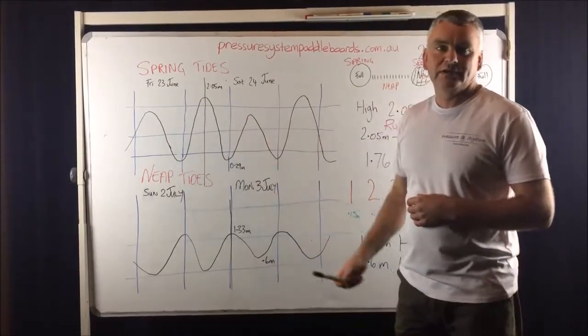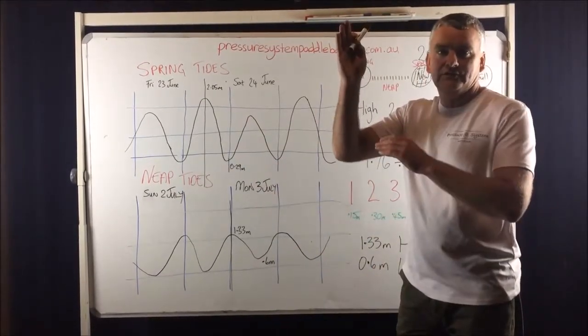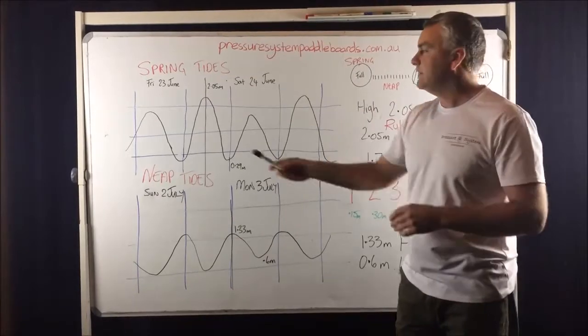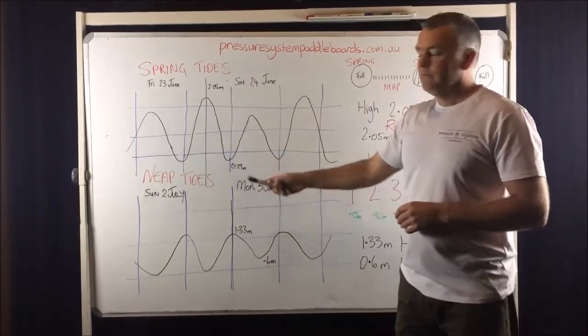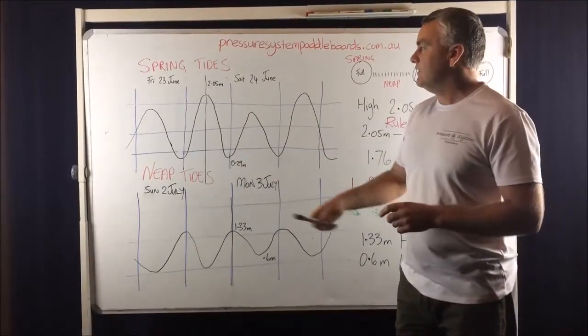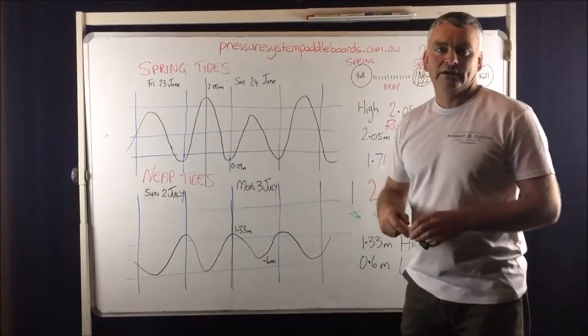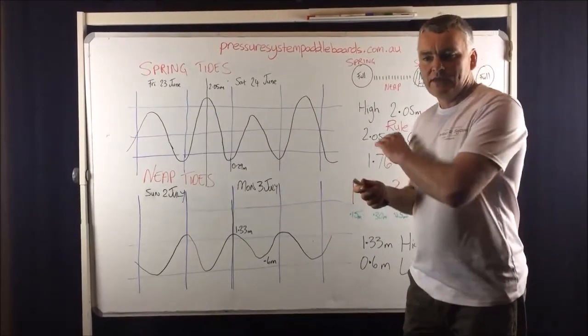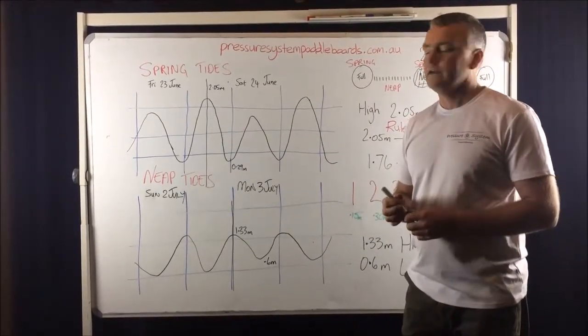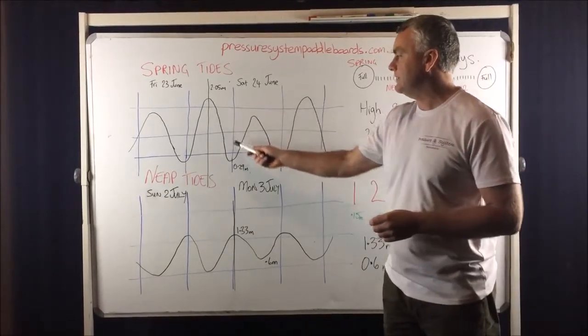So in a 6 hour period, because we know from high to low tide it takes 6 hours, out of the estuary we've got to get rid of nearly 2 metres of water in 6 hours. So there's a hell of a lot of water moving. It's really fast during this period.